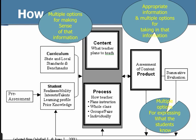How do you implement differentiated instruction? First, there's always pre-assessment for the teacher to assess students' readiness, ability to learn, learner profile, and prior knowledge. Then there's content — using appropriate information with multiple options for taking in that information. The process involves planning instruction for the whole class, groups, pairs, or individuals, with multiple options for making sense of content. At the end, we assess student understanding, use different options to allow students to express what they know, and do a summary evaluation to see if they have improved or learned.